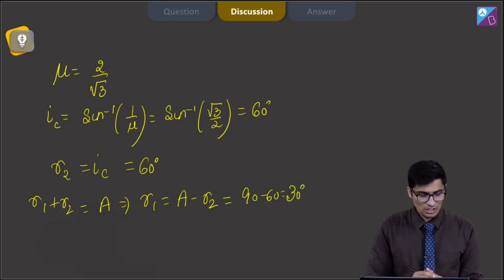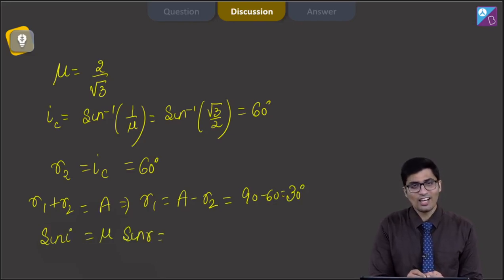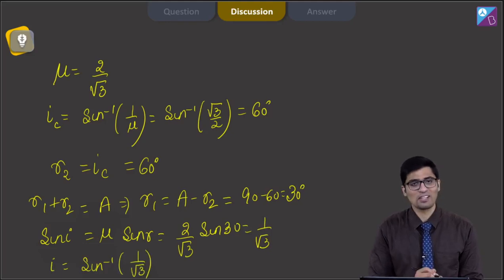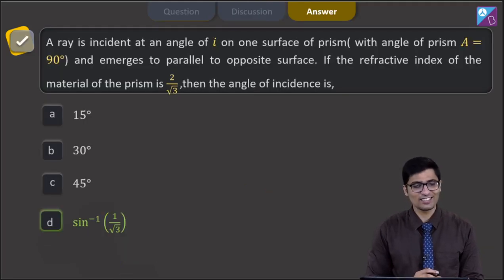Now, from Snell's law we can write down that sin I is equal to mu sin R and this will be equal to 2 by root 3 into sin 30 and that will be equal to 1 by root 3 meaning that I will be equal to sin inverse of 1 by root 3 and hence for this question the correct answer is option D.